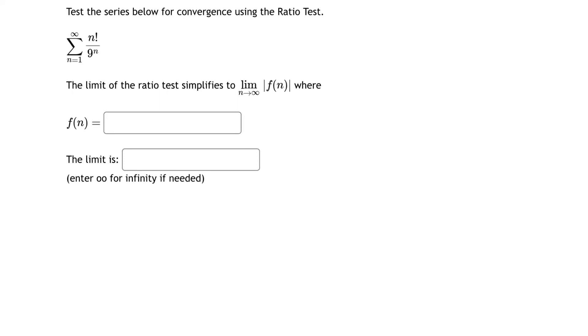In this problem, we're going to test the series below for convergence using the ratio test. The specific series is the series n equals 1 to infinity of n factorial divided by 9 to the n.